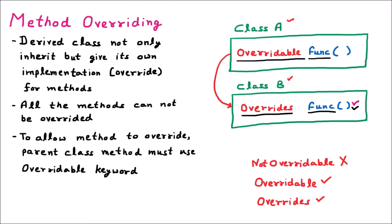To summarize overriding: suppose we have class A and class B, and class B inherits class A. If both classes have a method named 'func' where the method name, arguments, and argument types are all the same, then this is called overriding. In overriding, the derived class can provide its own implementation.